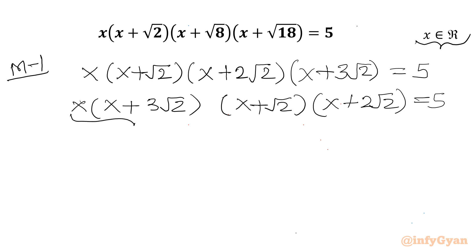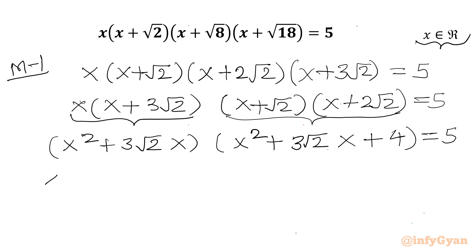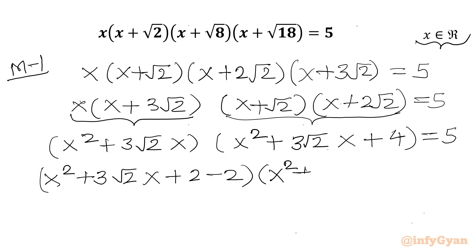Now multiply these two pairs. So I can write (x² plus 3√2·x) and (x² plus 3√2·x plus 2·2) equal to 5, which gives (x² plus 3√2·x) times (x² plus 3√2·x plus 4) equal to 5. Now I add and subtract 2 inside: I write (x² plus 3√2·x plus 2 minus 2) times (x² plus 3√2·x plus 2 plus 2) equal to 5.